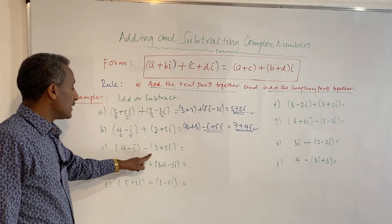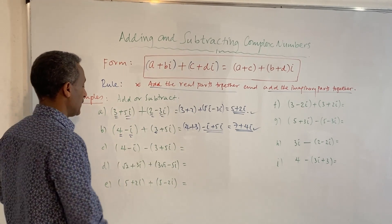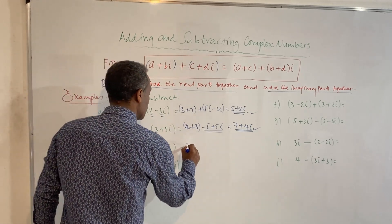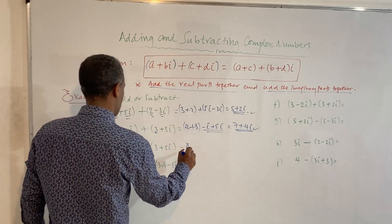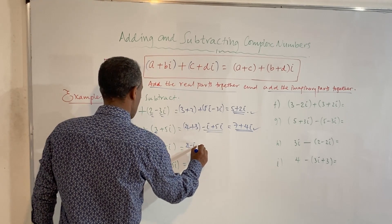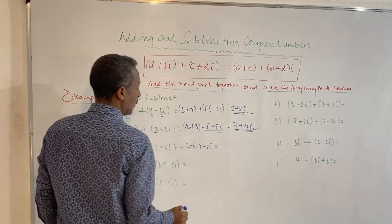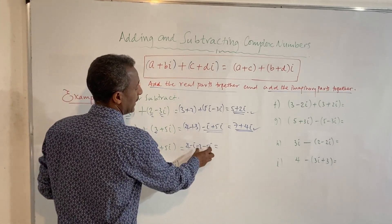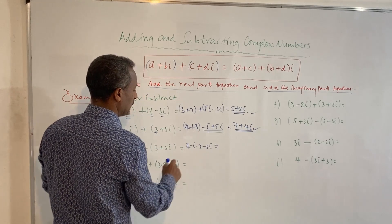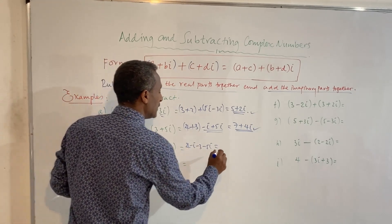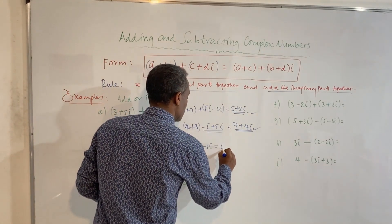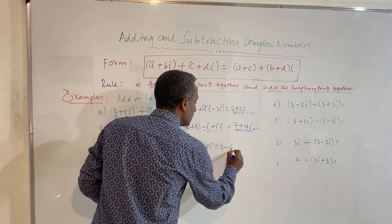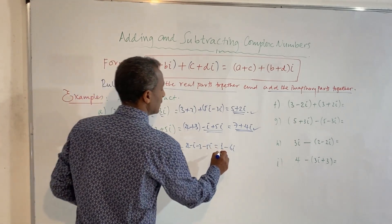Now let's try 4 minus i minus 3 plus 5i. We have a minus sign, so we distribute: 4 minus i minus 3 minus 5i. We collect like terms — the real parts together and the imaginary parts together. 4 minus 3 is 1, and minus i minus 5i is minus 6i. So the answer is 1 minus 6i.